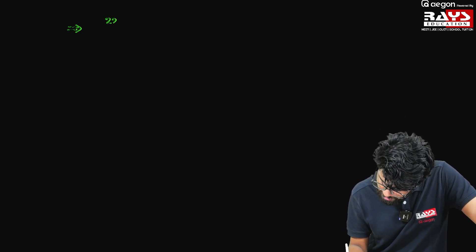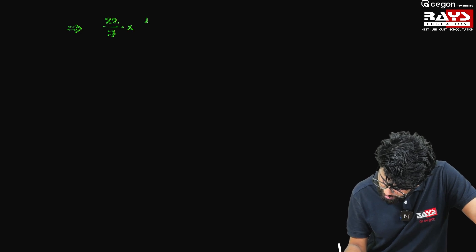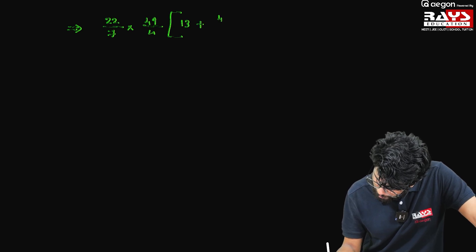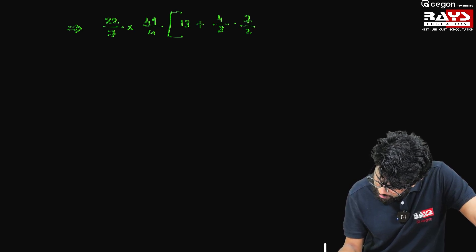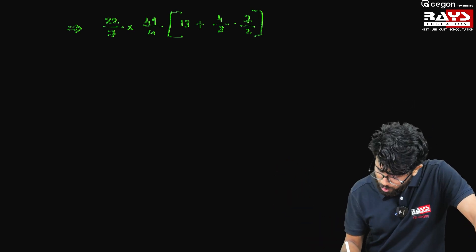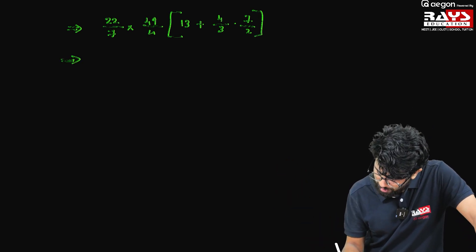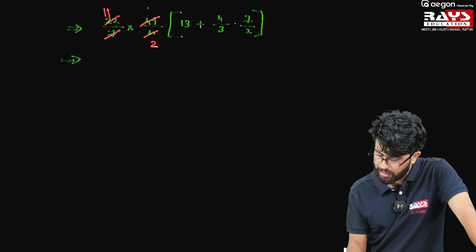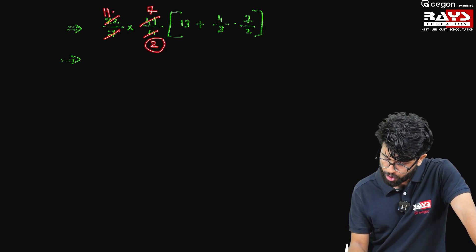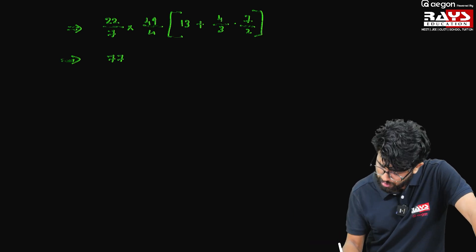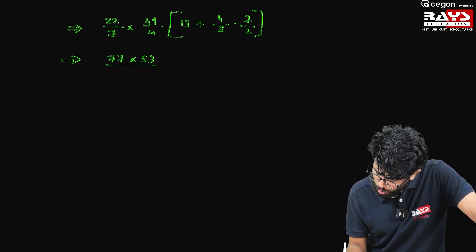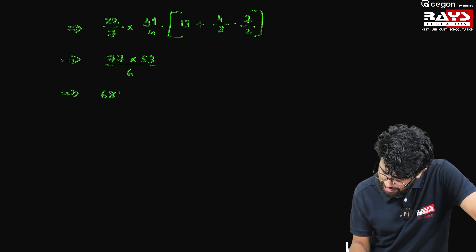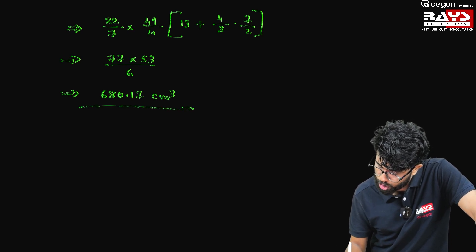Let's substitute on a new page. We get 22/7 as π, into 49/4, in the bracket we have 13 plus 4/3 into 7/2. After cancelling, 22 and 4 give 11 and 2, and 7 and 49 give 7. So we have 11 into 7 by 2, multiplied by the bracket. Inside the bracket we get 53/3. So the denominator becomes 6, giving 77 into 53 by 6. The final answer is approximately 680.17 cm³.